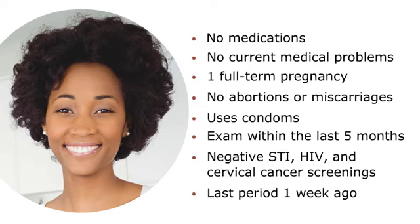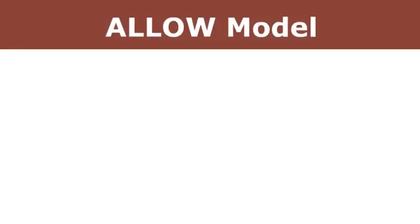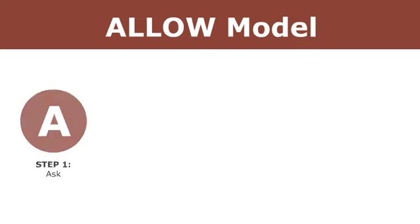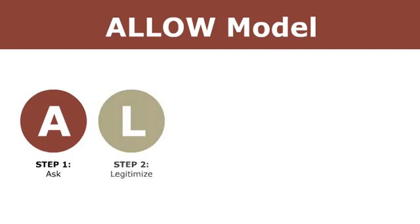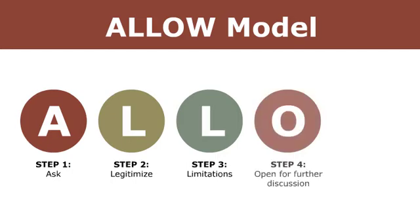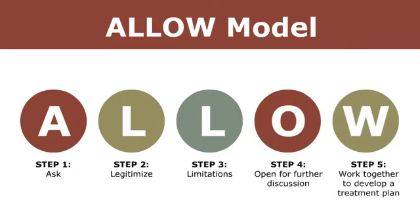At your clinic, you routinely conduct an in-depth sexual health history for each patient, following the ALLOW model to explore current concerns and symptoms and develop treatment plans that meet each patient's sexual and reproductive health needs and goals. The ALLOW model stands for A: Ask, L: Legitimize, L: Limitations, O: Open for further discussion, and W: Work together to develop a treatment plan.